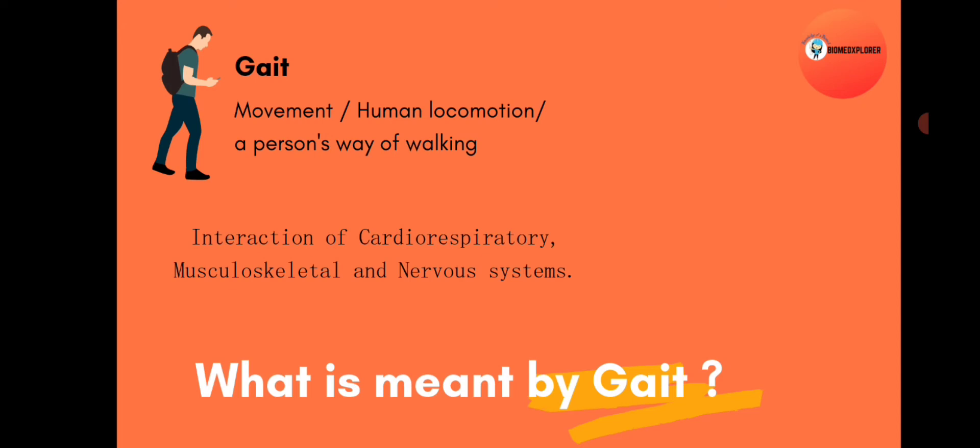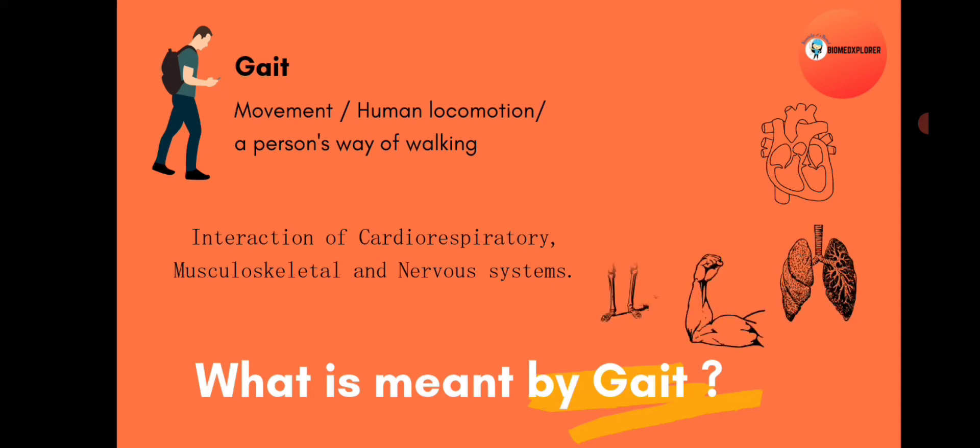Gait is an interaction of cardio-respiratory, musculoskeletal, and nervous systems. So gait is an interplay of these biological systems.